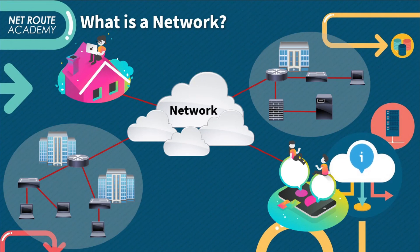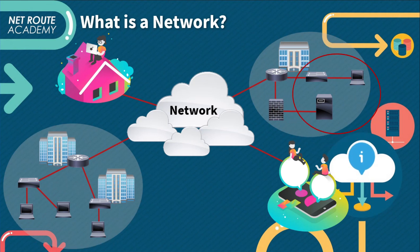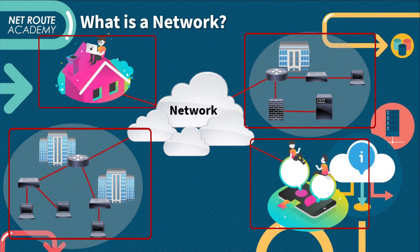For us to better understand the topic, we will also discuss the following: what is a computer network, the characteristics of a network, the physical components of a network, and lastly how to interpret a network diagram. The term network means connecting different components together. For easier understanding, just think of a network connected to a personal computer, servers, phones, and other types of devices that can communicate with each other.